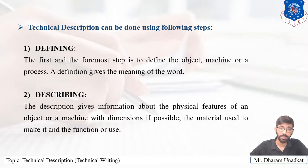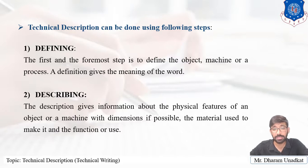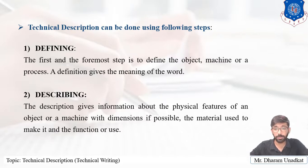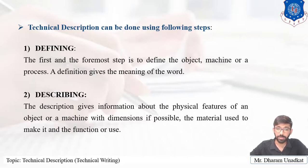The second step is the describing part. The description gives information about the physical features of an object, machine, or product with dimensions if possible. The next part in the booklet is the description of the product — its dimensions, advantages and disadvantages, the material used to make it, and its functions and uses. The description must be so vivid and detailed that readers are able to visualize the thing. In case of process description, we must write the objective of the process and its final result.